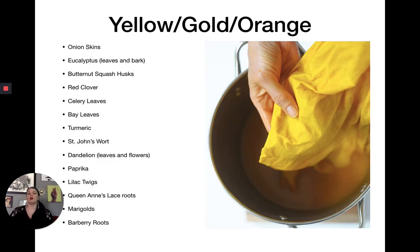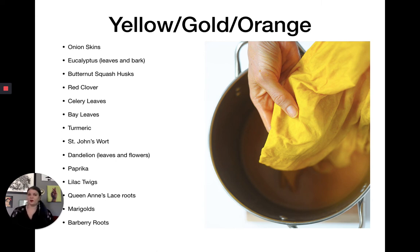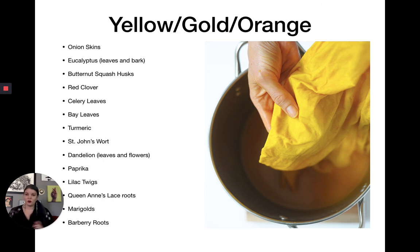For yellow, gold, and orange: onion skins (red onion skins tend to give more of a green). Eucalyptus leaves and bark — the bark has more tannin so it works better. Butternut squash husks, red clover, celery leaves, bay leaves. Turmeric is one of the most reliable dyes and will almost always give a very bright yellow. St. John's Wort (at the health food store), dandelion leaves and flowers, paprika for a rusty orange, lilac twigs (grind them up), Queen Anne's lace roots, marigolds, and barberry roots.